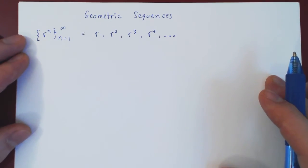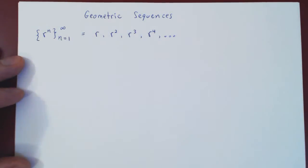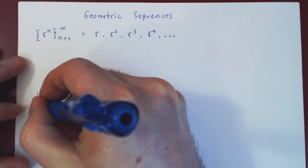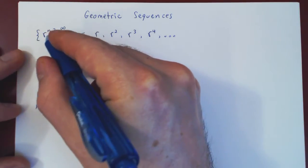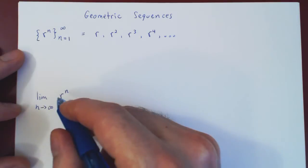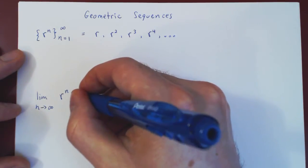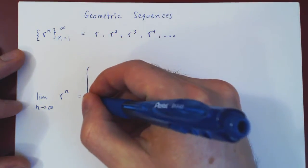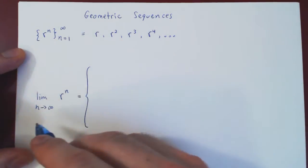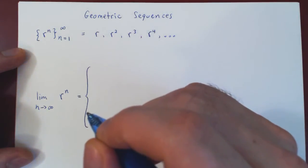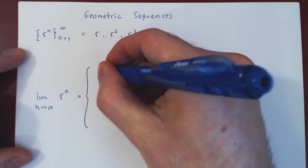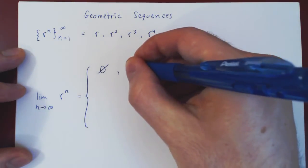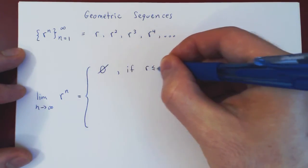Here's the result in the case of a geometric sequence, and you'll see there are a few possibilities. We have the limit as n goes to infinity of the nth term of our sequence being the nth power of r, and again r is a fixed real number. We will subdivide the result into four parts. The first part is: if r is less than or equal to negative 1, the limit does not exist.